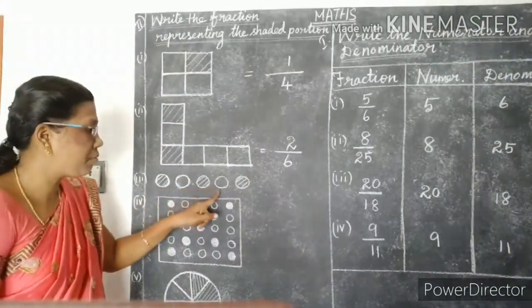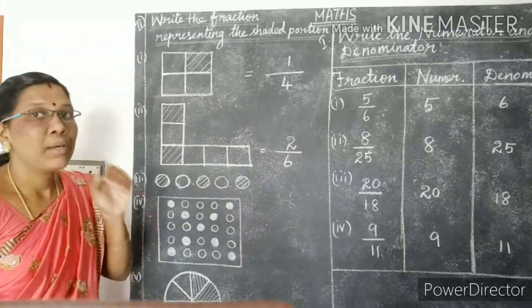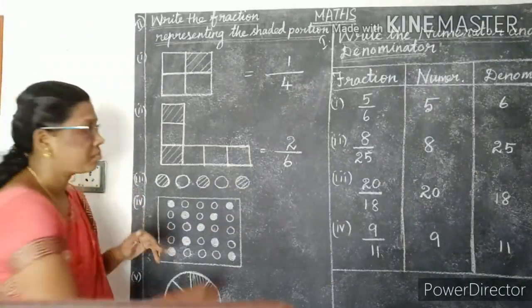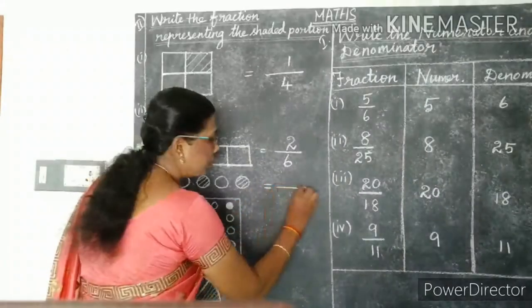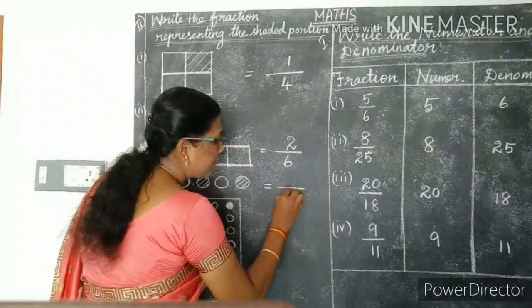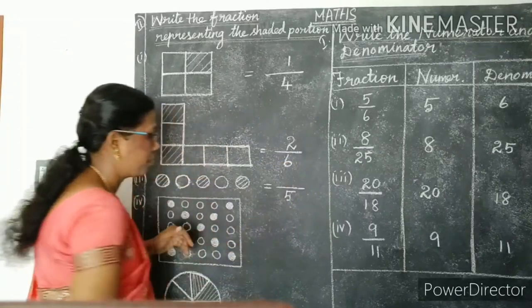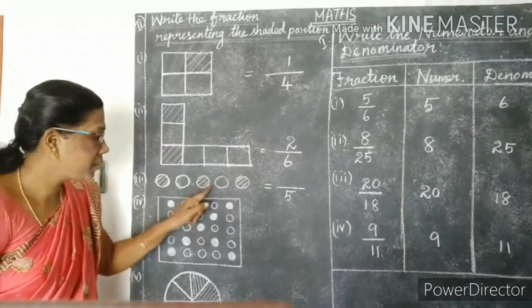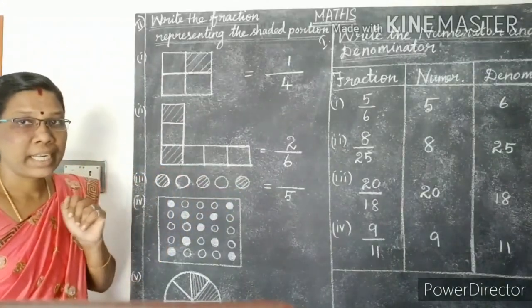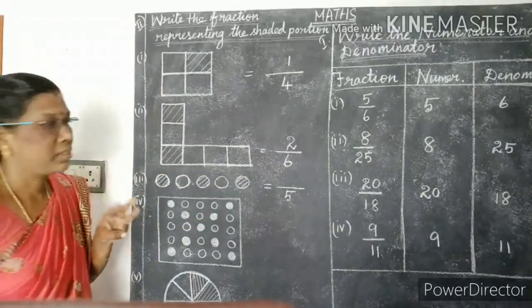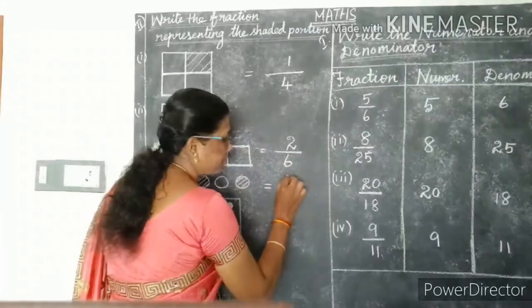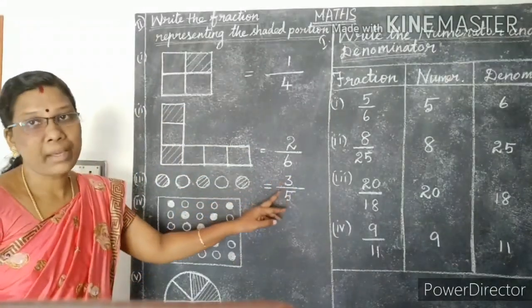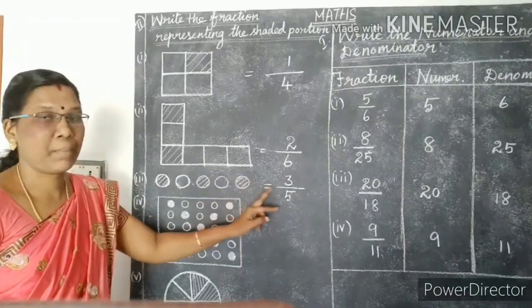See the next one. One, two, three, four, five — totally five circles are there. So write five as denominator. How many shaded portions here? One, two, three — totally three shaded portions. Write three as numerator. So the fraction is three by five.